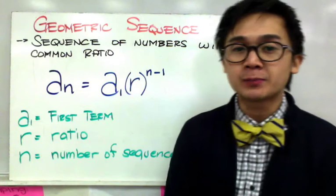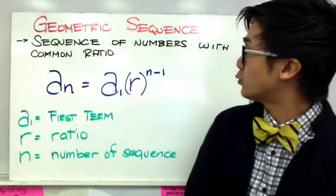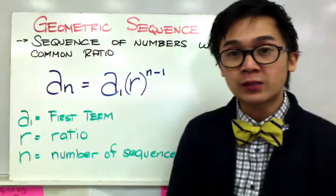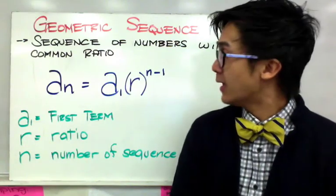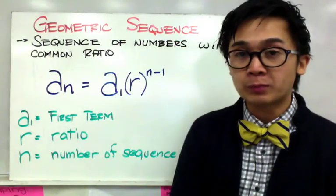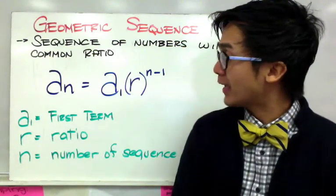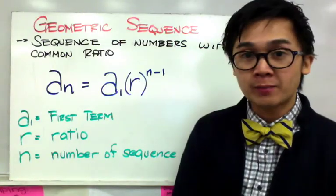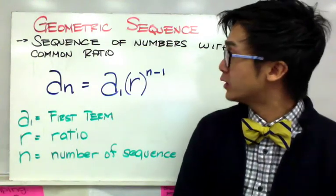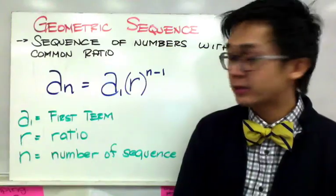Now geometric sequence is basically a sequence of numbers with common ratio, and that's the difference between geometric sequence and arithmetic sequence. Now the formula that we are using will be different and it's going to be a sub n equal to a sub 1 times r to the n minus 1. So this is the formula for geometric sequence that we will use today.